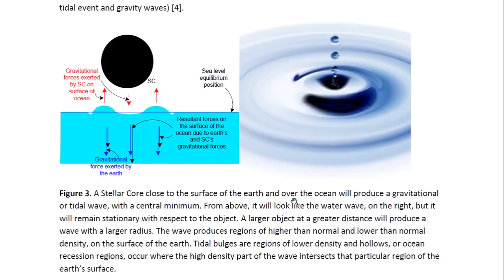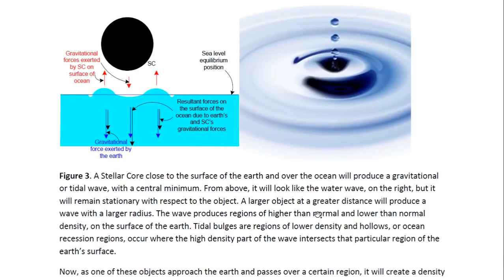So a stellar core close to the surface of the Earth and over the ocean will produce a gravitational or tidal wave with a central minimum. That's why there's a hollow in the center. From above, that's what it would look like. This is a cross-section of it. So it would look like this water wave, but it will remain stationary. A water wave will spread out, but a gravitational wave will stay in place. It will not move unless the object moves. A large object at a greater distance will produce a wave of a larger radius. That is, there's a larger distance between the bulges.